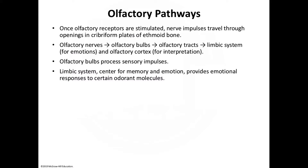The limbic system is the center for memory and emotion, which provides emotional responses to olfactory stimuli. For instance, smelling cinnamon pretzels or pizza in a mall evokes a pleasurable memory response. The limbic system is why we may feel nostalgic over a scent from the past — a familiar cologne or perfume can flood us with memories of a person.